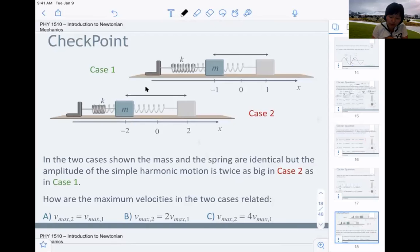If you write the position for case one and the position for case two, you would say position in case one, the amplitude is one, so we do negative one times cosine omega t. The y in case two is twice as much, so it's negative two cosine omega t. Now they have the same frequency. Why is that? Because frequency is the square root of k over m. They have the same mass, the same spring constant, so they have the same frequency. The difference is amplitude.